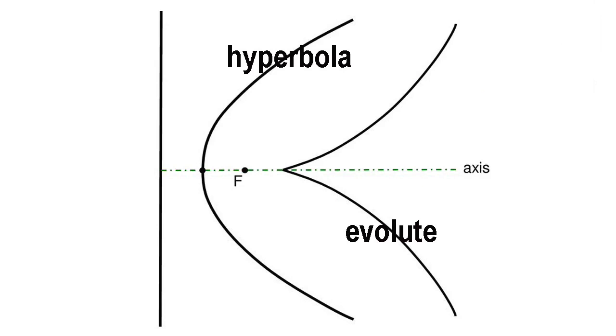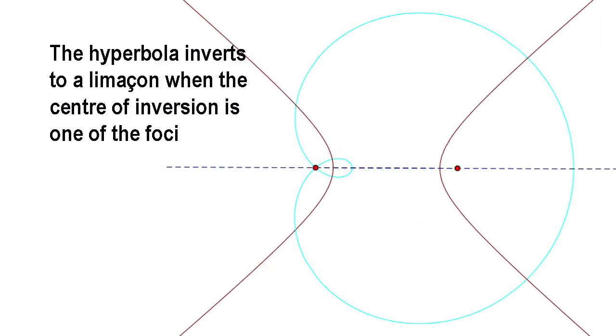If the center of a rectangular hyperbola is taken as the center of inversion, the rectangular hyperbola inverts to a lemniscate, while if the vertex is used as the center of inversion, the rectangular hyperbola inverts to a right strophoid. If the focus of a hyperbola is taken as the center of inversion, the hyperbola inverts to a lemniscate.